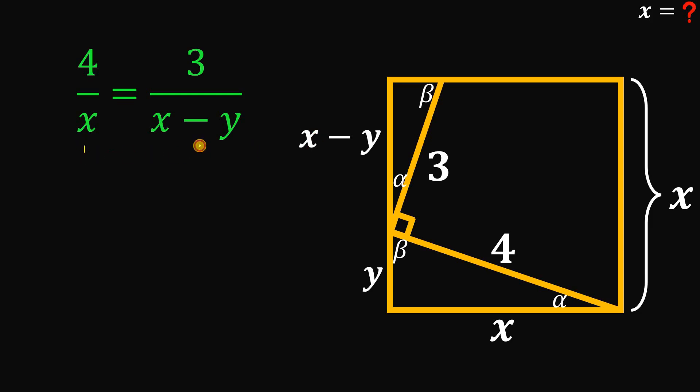So now what we're going to do is to focus on this equation. We're going to cross multiply. So we have 4x minus 4y equals 3x. Then combine like terms. We have here negative 4y equals negative x. Divide both sides by negative 4. So we have y equals x over 4. In short, we can rewrite y in terms of x. So y is just x over 4.